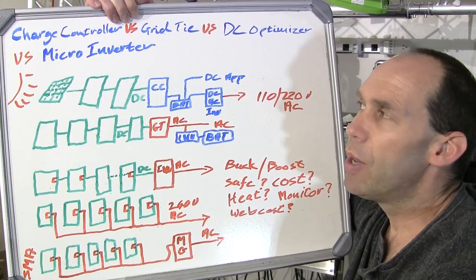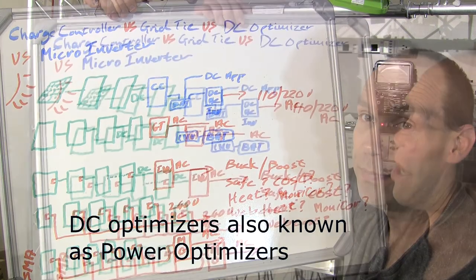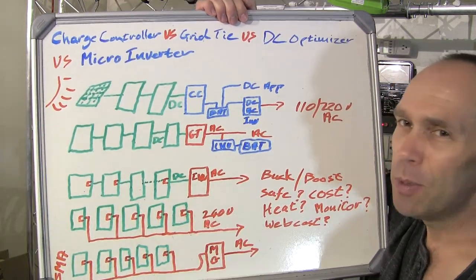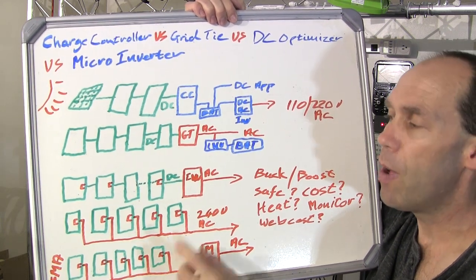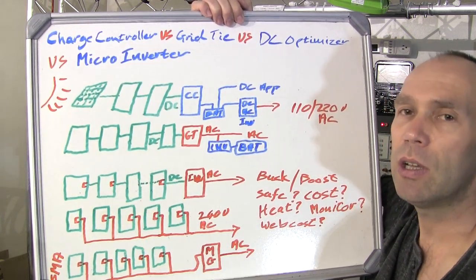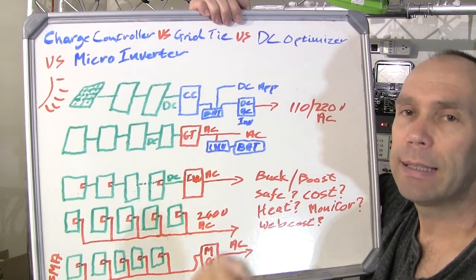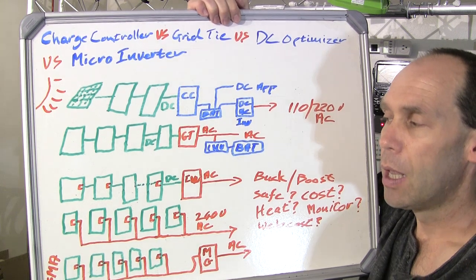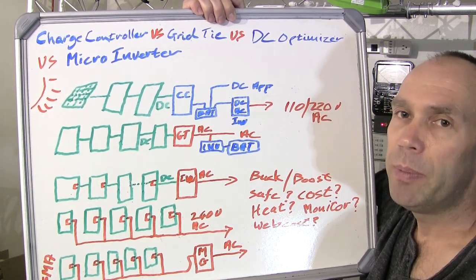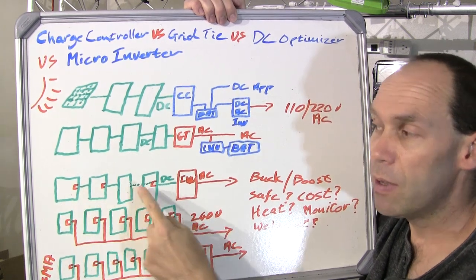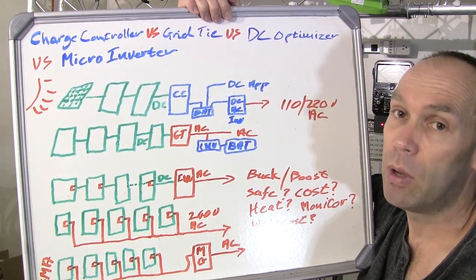So that's where we get to DC optimizers and micro inverters. DC optimizers provide a cost-effective way of providing control to each and every solar panel so that it can be optimized for the lighting it's getting. For the most part these DC optimizers have their own MPPT tracking on each of the solar panels, so each panel can be individually monitored.